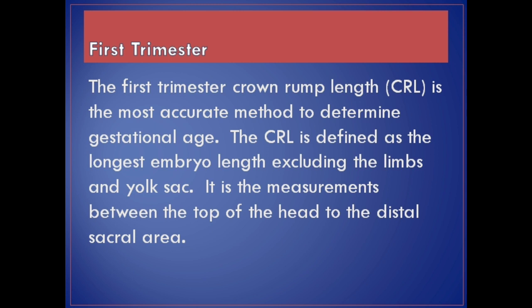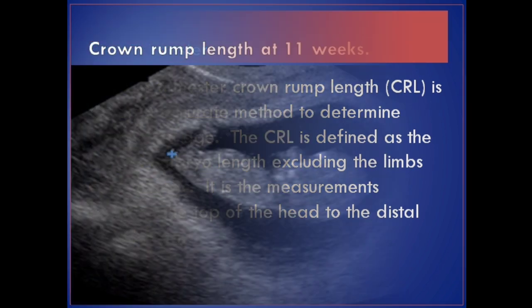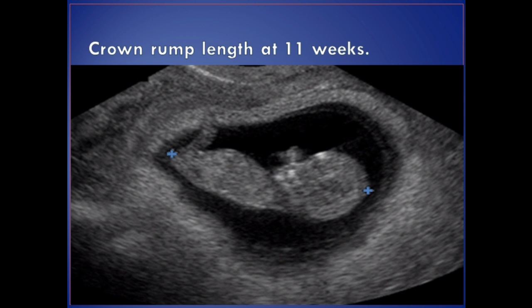First trimester. The first trimester crown rump length, CRL, is the most accurate method to determine gestational age. The CRL is defined as the longest embryo length excluding the limbs and yolk sac. It is the measurement between the top of the head to the distal sacral area. This image shows crown rump length at 11 weeks.